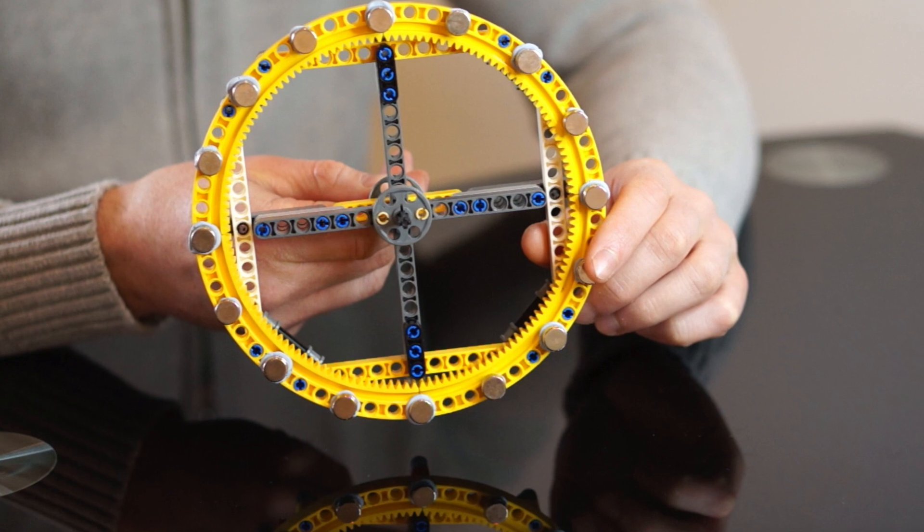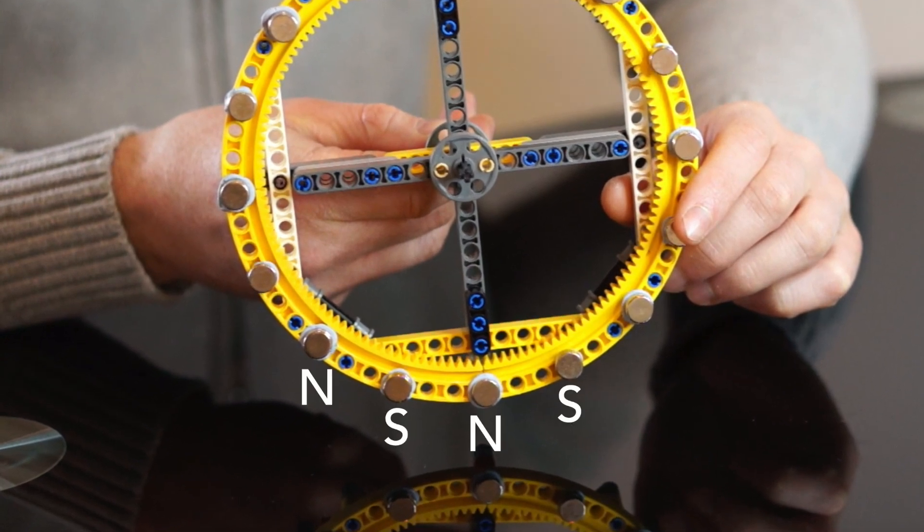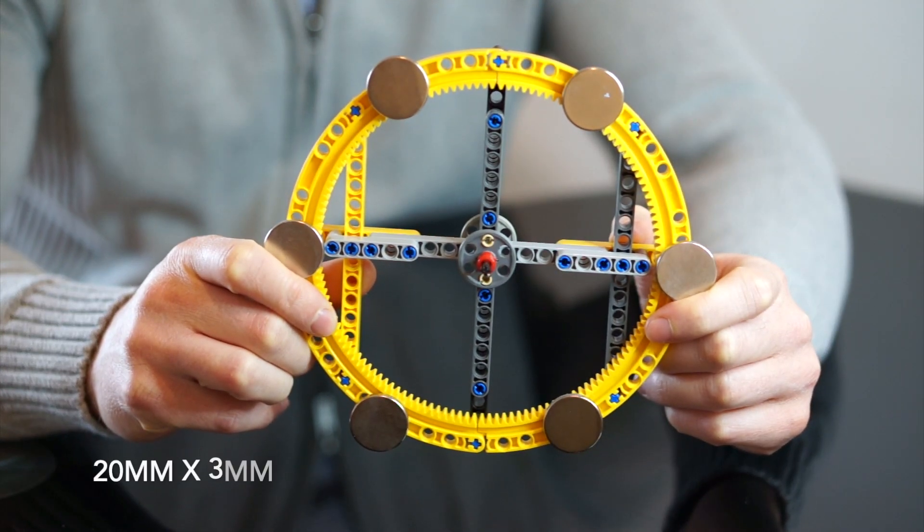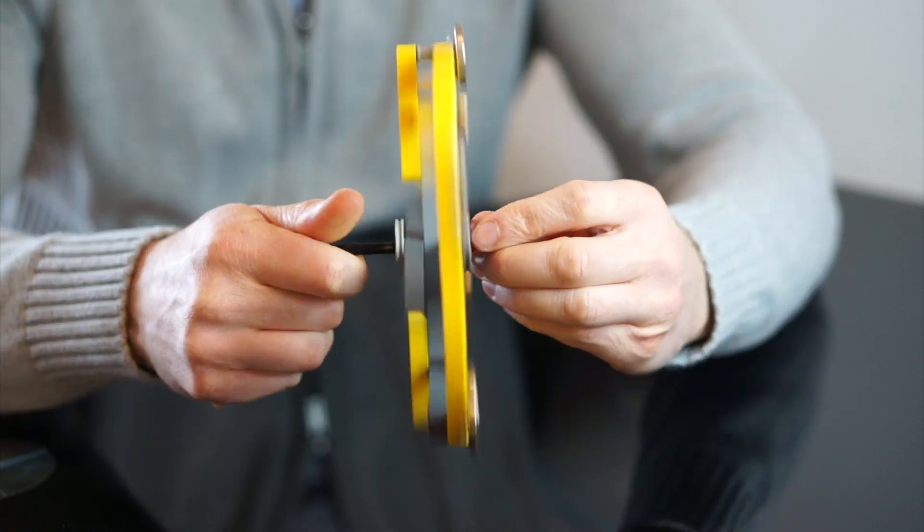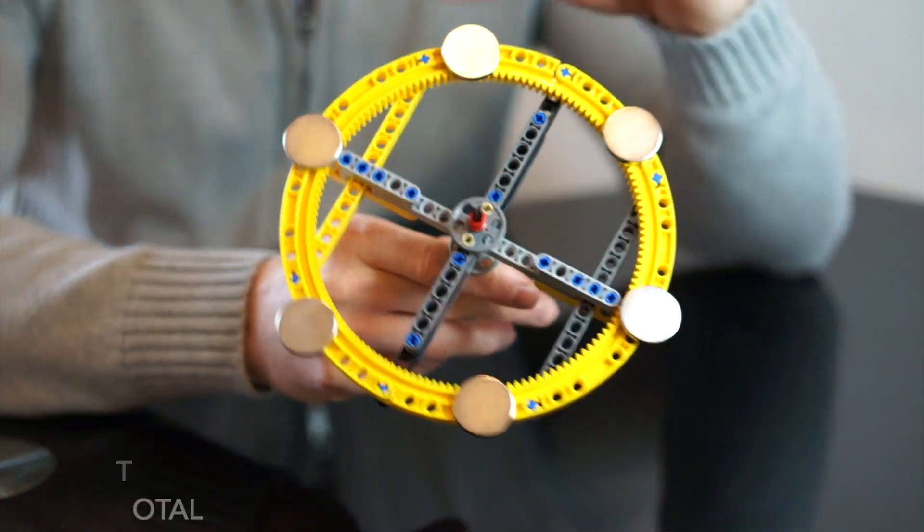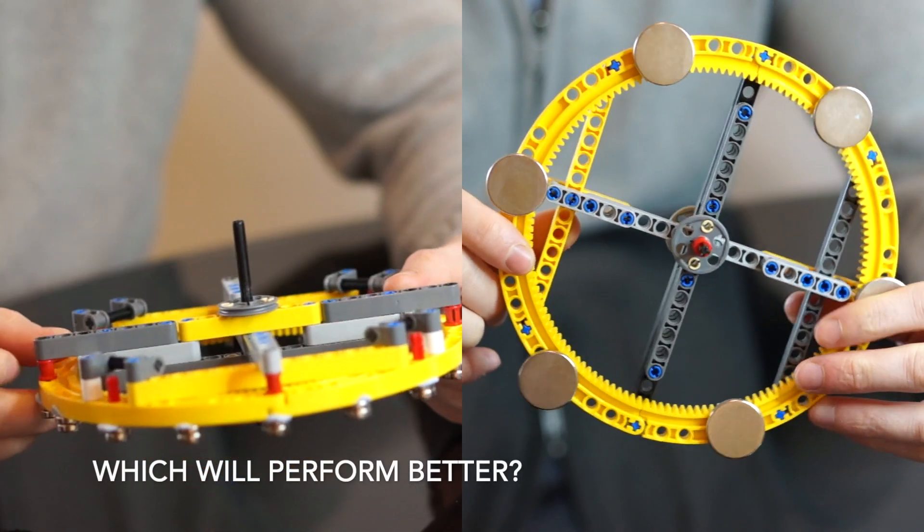Each magnet around the wheel switches from an exposed pole so we have an alternating north south north south etc. The second flywheel here has larger magnets which are 20 millimeters by 3 millimeters. These are quite a bit stronger and so we can't fit as many around the wheel. Only six compared to 16. Later we'll see which ones provide a better output for the generator at a given speed.